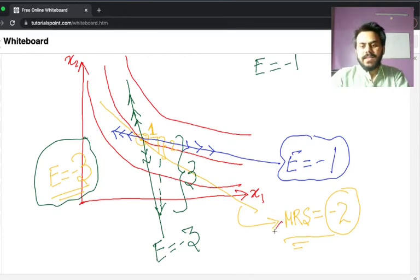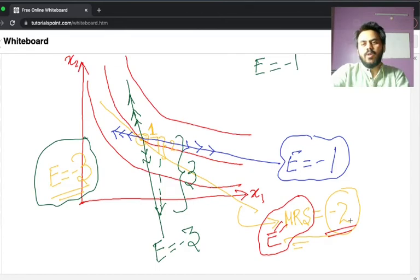When E is equal to MRS equal to minus 2, it means you would not like to trade with me because you will not be better off or worse off by trading with me. So when the exchange rate is equal to MRS, you would not like to trade.